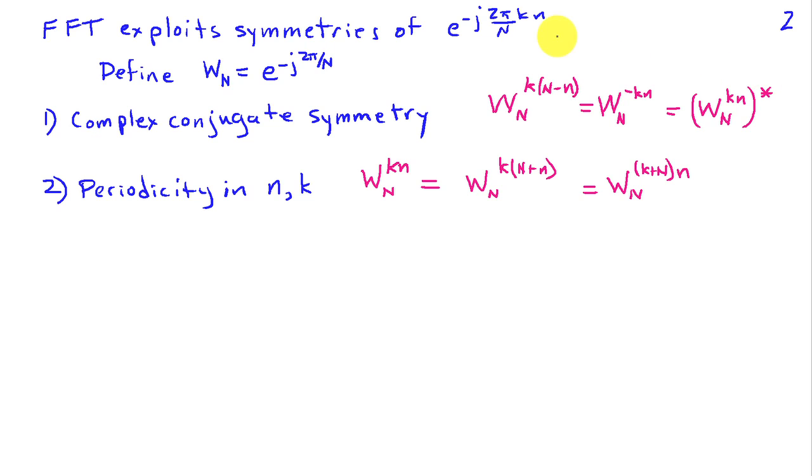So the FFT algorithm basically exploits special properties of the complex exponential e^(-j2π/N * kn). It's conventional to define a symbol W_N to represent e^(-j2π/N). With this symbol, we can write two of the important properties as follows. We have the complex conjugate symmetry, which says that if I look at time N-n, W_N^k raised to that power is actually the same as W_N^(-kn), and that's the same as (W_N^kn) conjugate.